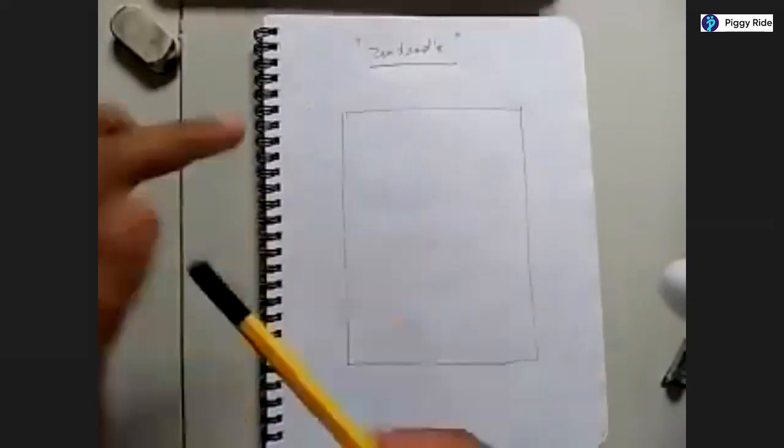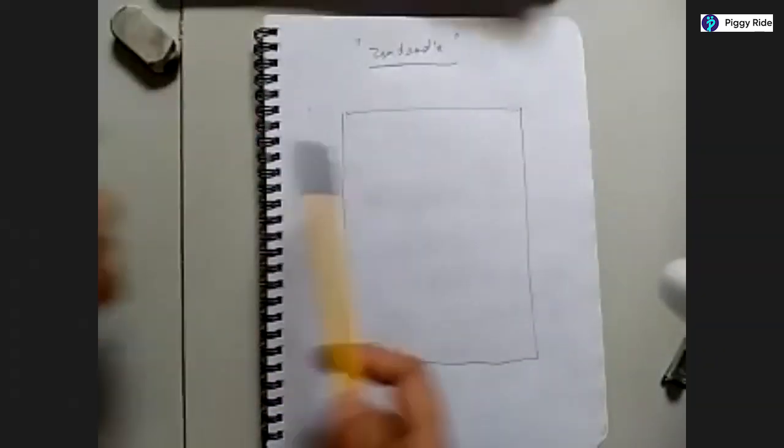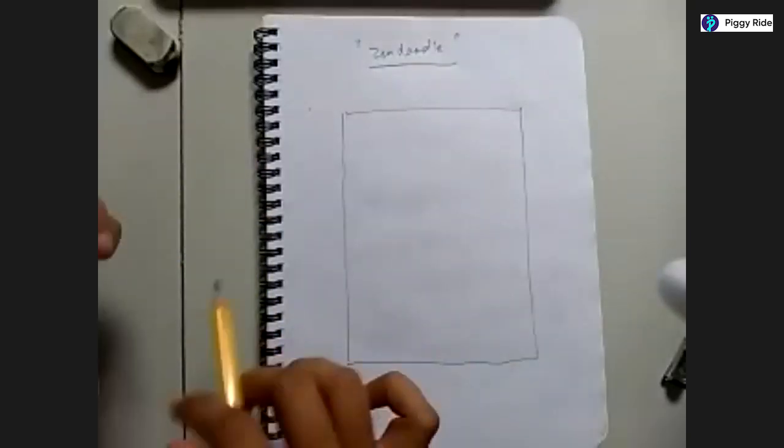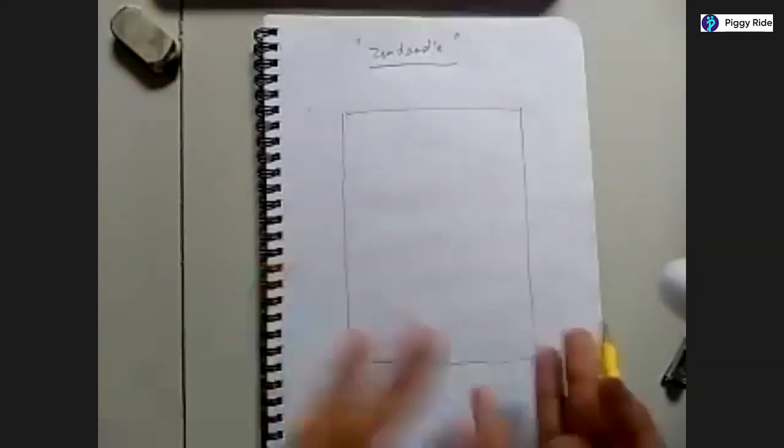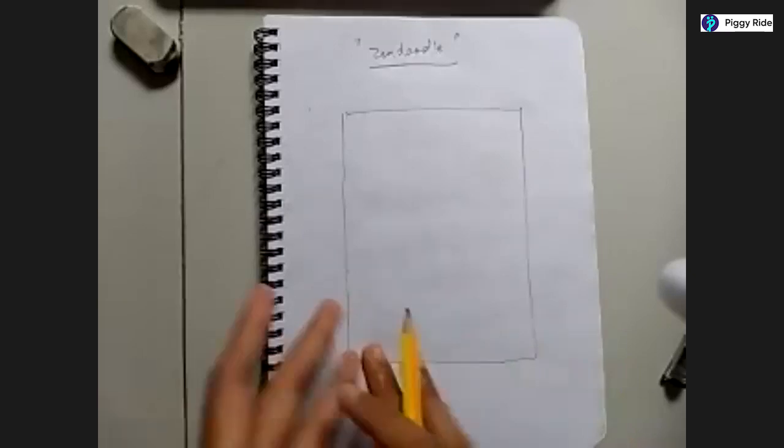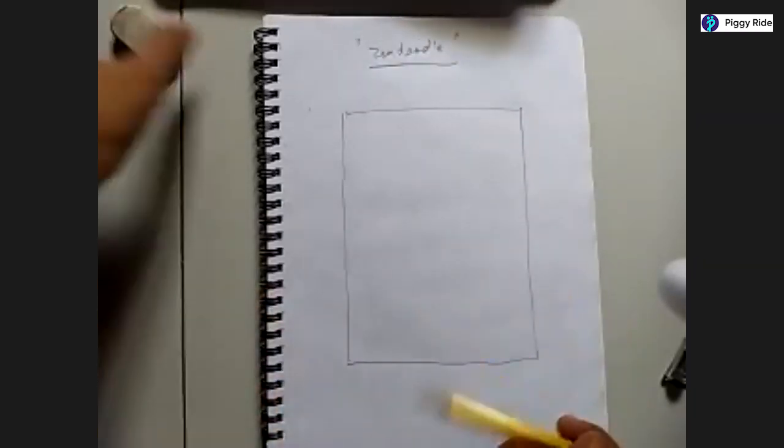Initially we are going to draw only using pencil. Whenever I instruct using a pen, that time you guys can take pen and start doing it, but initially we are going to use only pencil so that whenever we want to change anything or by mistake the line has not come out properly, we can always correct it using an eraser.